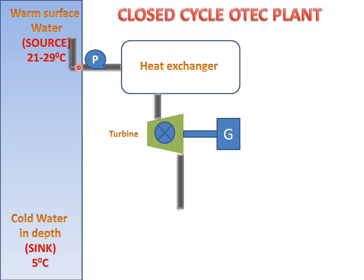Water will come through the surface, and there will be a heat exchanger in the closed cycle OTEC plant which will exchange the heat of the surface water. The working fluid will be ammonia, and this ammonia will go to the turbine.